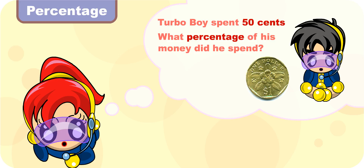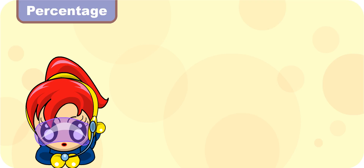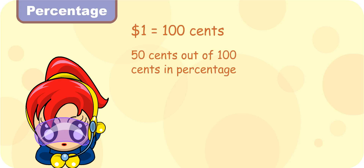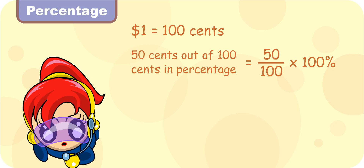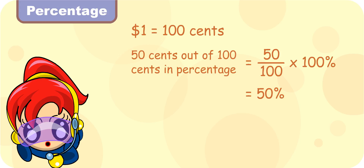You must remember to change $1 into cents. Okay. $1 equals to 100 cents. So 50 cents out of 100 cents in percentage is 50 over 100 times 100%, which equals 50%. That's right. You have just expressed one quantity as a percentage of another.